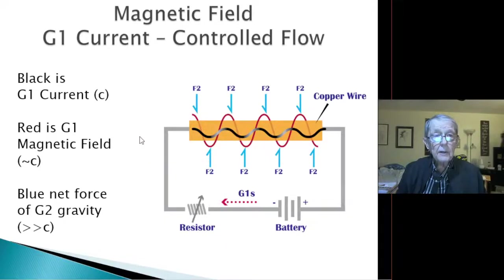Okay, magnetic field, G1 current controls the flow. This is a simple circuit. I had just finished refraction. This is very early on in the development of the TPM model. I just finished that, and I was going to apply and look at magnetism and see what could be established.